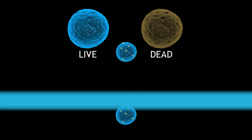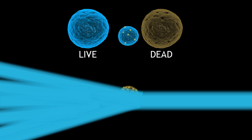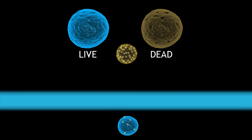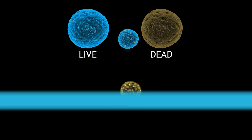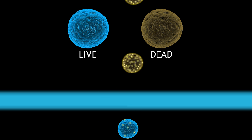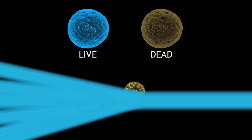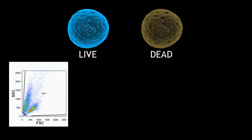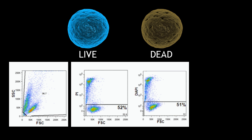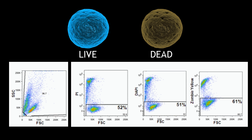You don't want to compromise your experiment by measuring artifacts in your analysis or sorting non-viable cells. Since a morphology gate alone is not sufficient to remove compromised cells, you should be including a viability dye in every experiment.